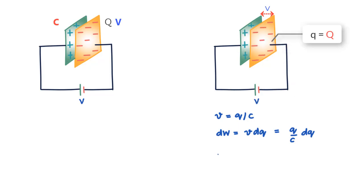So integrating both sides, we get W = ∫dW = (1/C)∫q dq from zero to final charge Q. When you integrate this, we find work done is Q²/2C.